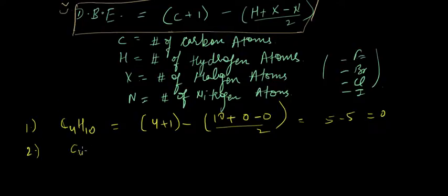Second example is C4H8. Number of carbon atoms is 4 plus 1 minus number of hydrogen atoms is 8, X is 0, N is 0, divided by 2. That gives me DBE of 1.